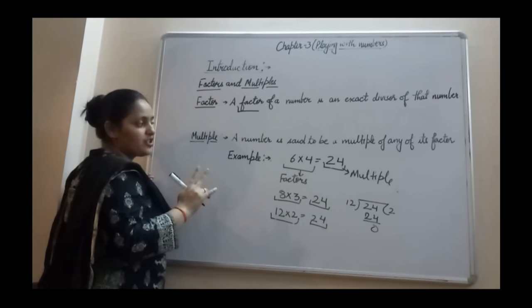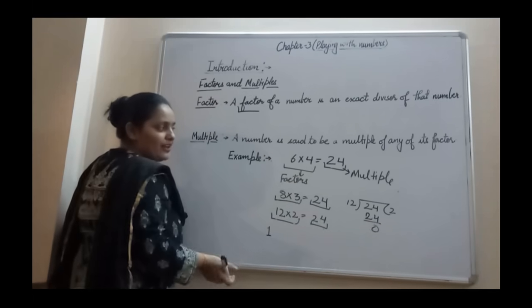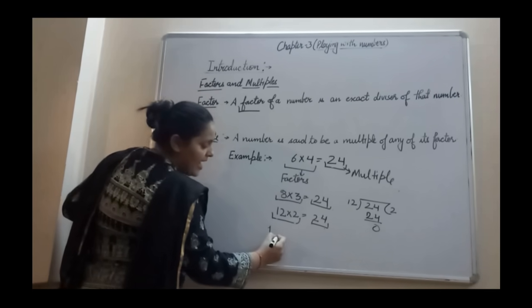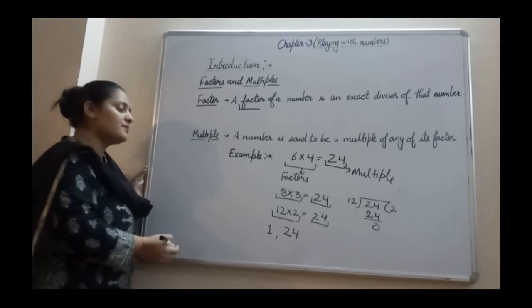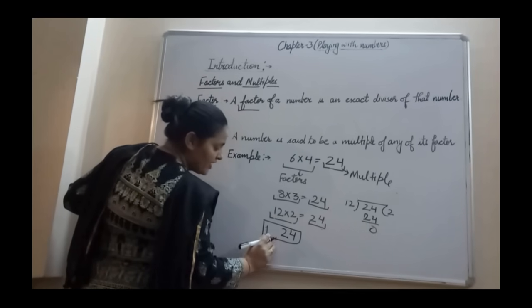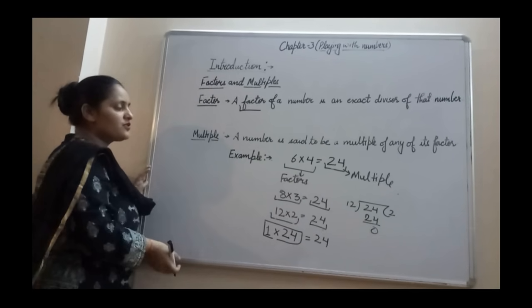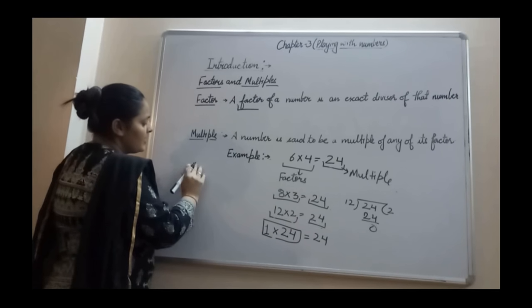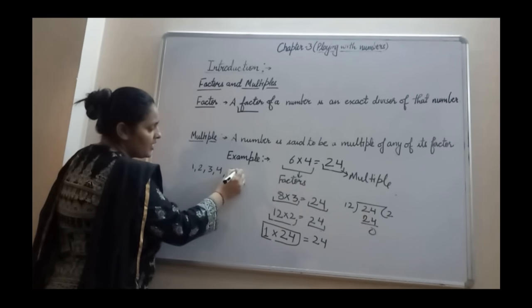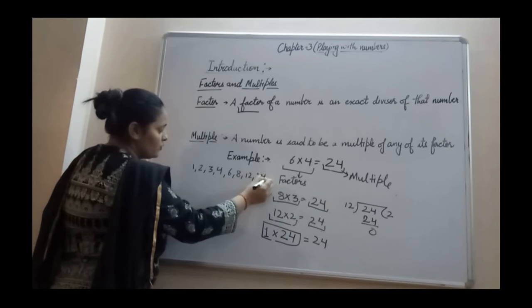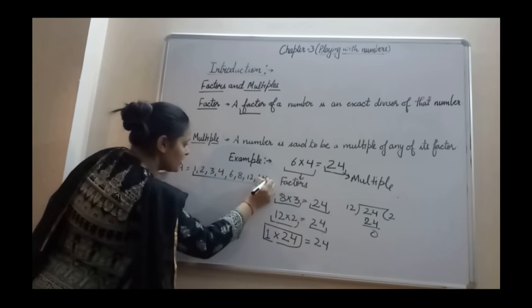There are two main factors of every number which we can always get. We can easily divide 24 by 1, so 1 is also a factor of 24. And 24 itself — when you divide 24, it is completely divisible. When you multiply 1 by 24 your result is 24. So the factors of 24 are: 1, 2, 3, 4, 6, 8, 12, 24.